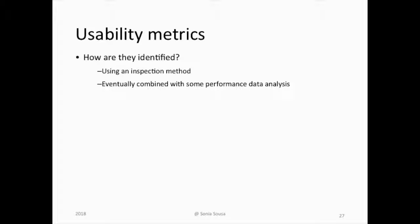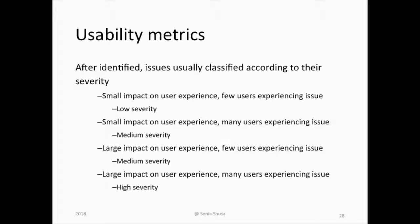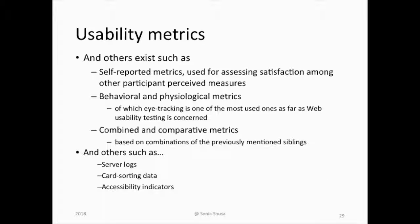Another way to assess the quality of our high fidelity prototype is using heuristics evaluation, or an inspection method. We inspect our product based on a set of heuristics usually provided by experts, like Nielsen's Heuristics Evaluation. These heuristics help us understand if our product meets the requirements needed to be in the market. After testing and data analysis, we report our findings in terms of how high the impact of the issues is on the user experience — usually classifying them as low or high severity.